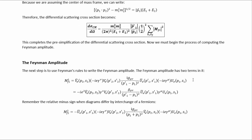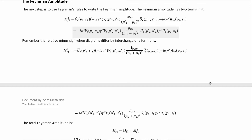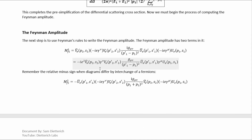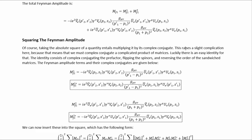The next step is to use Feynman's rules to write out the Feynman amplitude. The first diagram gives one term via the Feynman rules, and the second diagram gives another. So the full Feynman amplitude for the tree level is the sum of the two. Remember, we insert a relative minus sign because of the interchange of external fermions differing the two Feynman diagrams. Taking the absolute square entails multiplying by the complex conjugate, which raises a slight complication because we must complex conjugate a complicated product of matrices. Luckily, there is an easy identity for that.